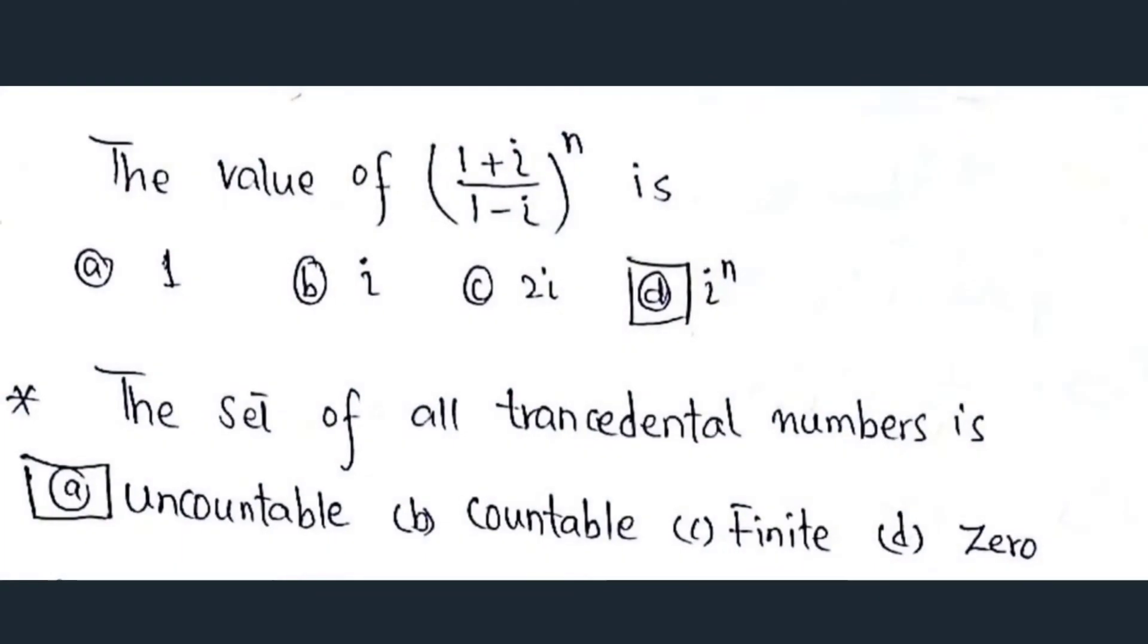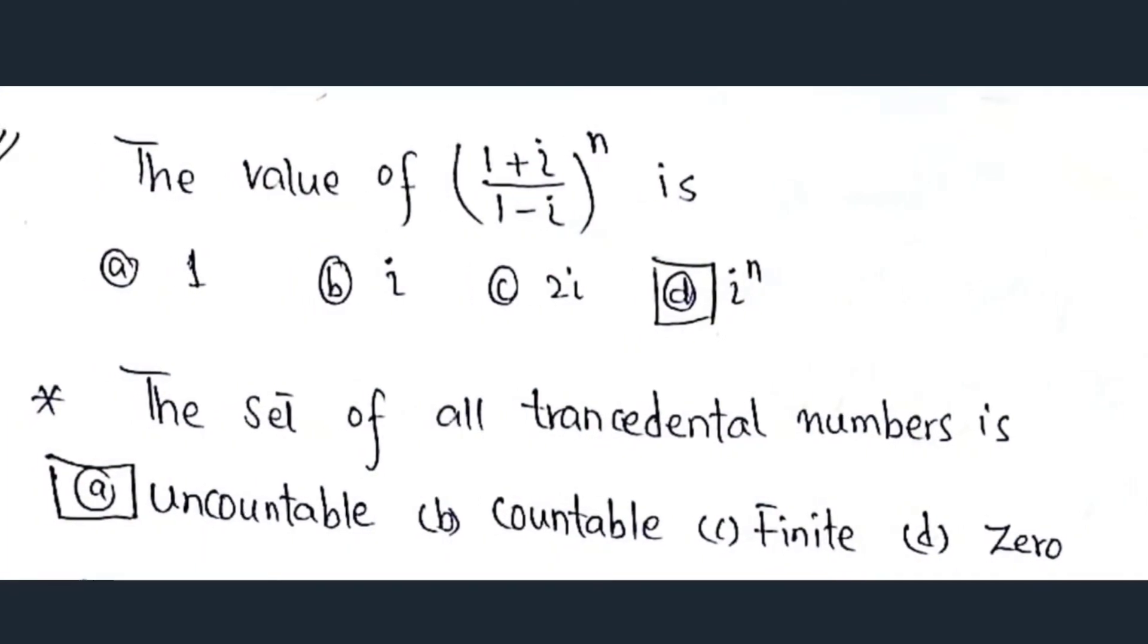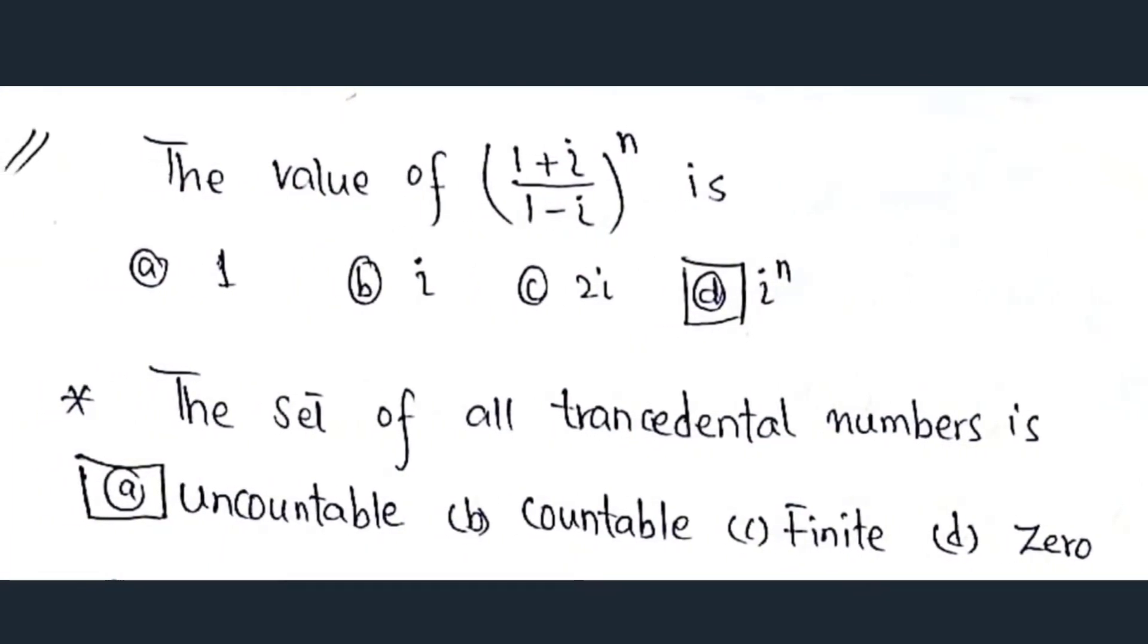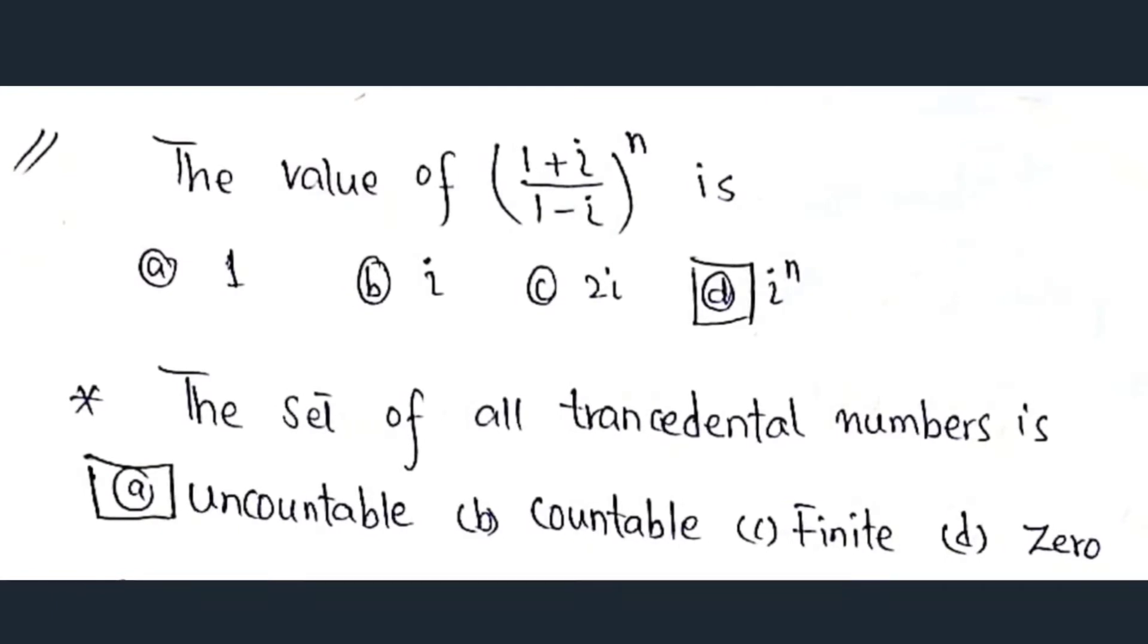Our next question is, the value of 1 plus iota divided by 1 minus iota raised to power n is iota power n. The set of all transcendental numbers is uncountable.